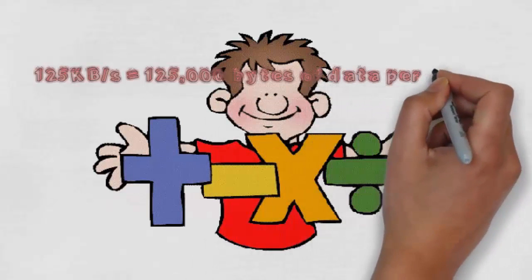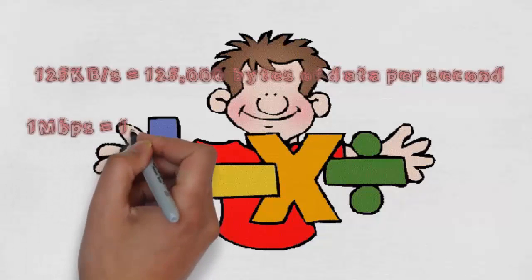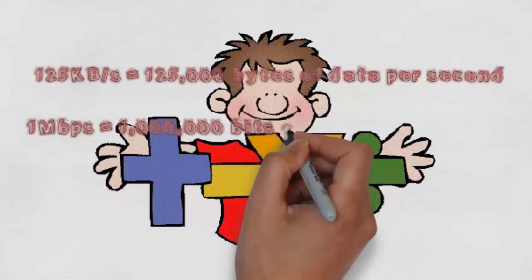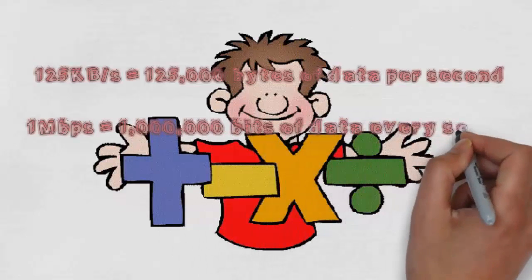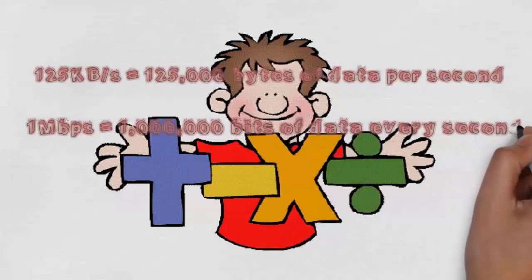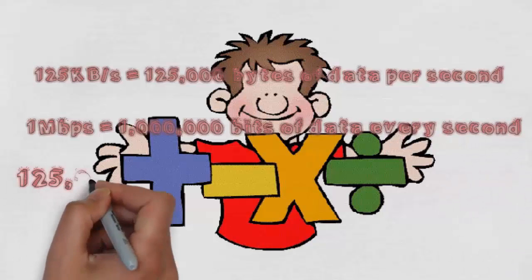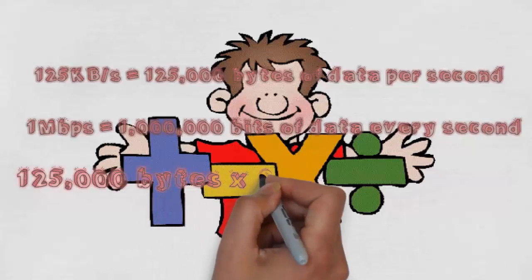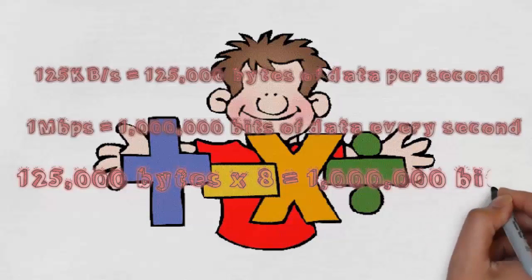Our maths can be seen here. 125 KB per second equals 125,000 bytes of data per second. 1 Mbps equals 1 million bits of data per second. 125,000 bytes multiplied by 8 equals 1 million bits.